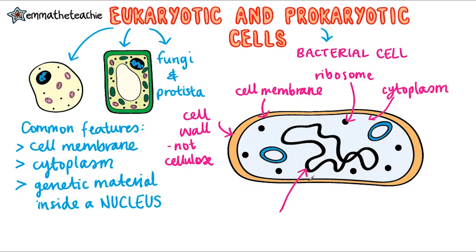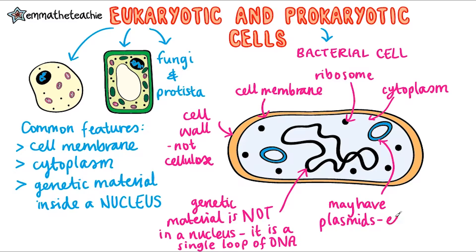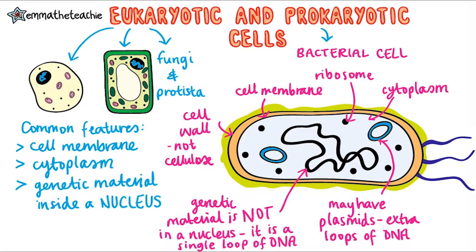The next big difference is that their genetic material is not enclosed in a nucleus. Instead, it's found as a single loop of DNA inside the cytoplasm. There may also be one or more small rings of extra DNA, which are called plasmids. Some bacterial cells may also have a slime layer, which is for protection, and they may have a flagellum, or plural flagella, for movement.